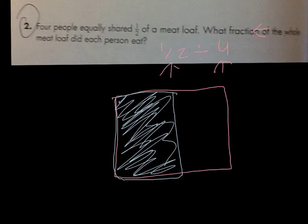They're equally sharing one-half, but since there's four of them, we have to divide it up into fourths. One, two, three lines equals four pieces.